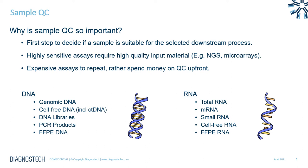Why is sample QC so important? It's really the first step in your workflow to decide if a sample is suitable for your selected downstream process. Whether you're performing NGS or microarrays, these are both highly sensitive assays and therefore require really high quality input material. Good DNA library quality ensures good quality reads and maximizes your sequencing output. For gene expression arrays or RNA-seq, the quality of your input RNA will determine the success of your library preparation and the reproducibility of the microarrays. Both of these assay types are very expensive to repeat, so it's better to invest up front in ensuring high quality samples.